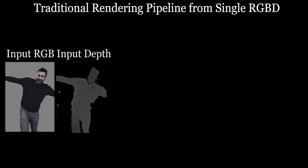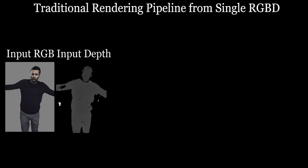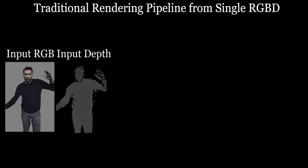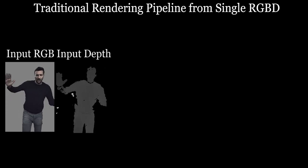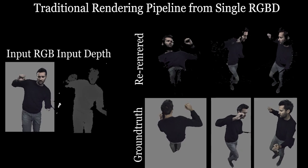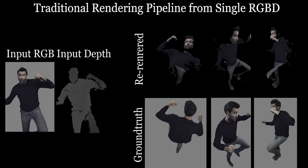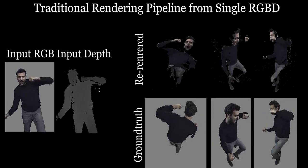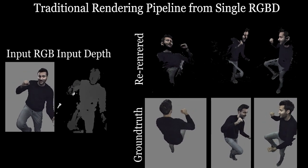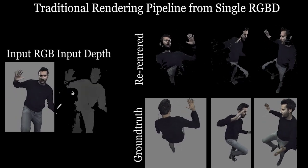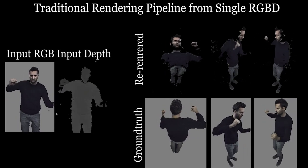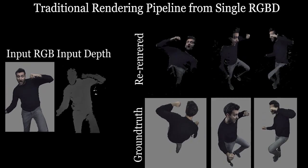A typical geometrically based pipeline could simply use the depth information to warp the color to a novel viewpoint. However, due to occlusions, noise, and artifacts in the depth, the re-rendered view will typically be both incomplete and inaccurate. This is most evident for back-facing views as shown here.